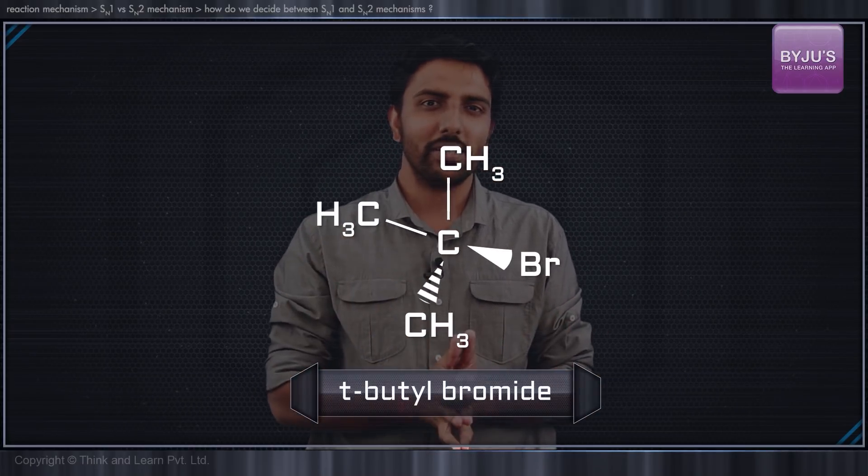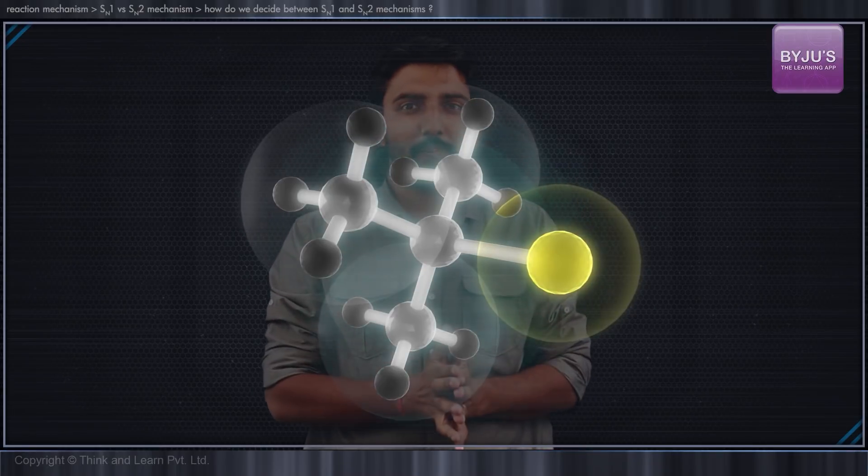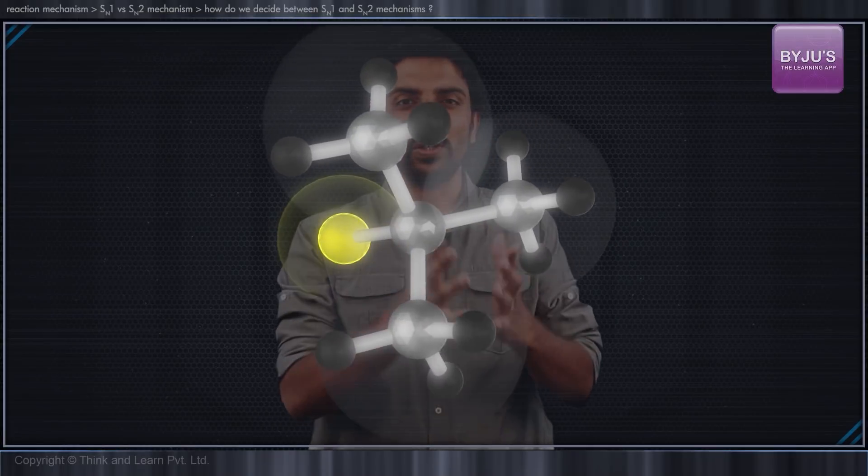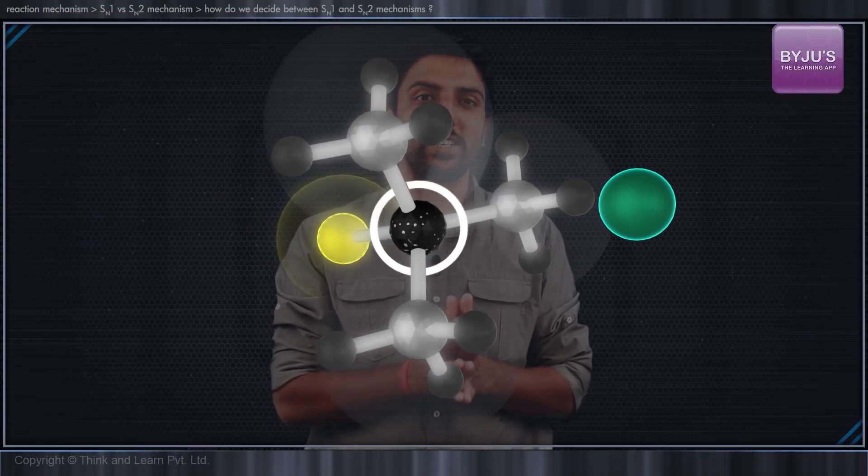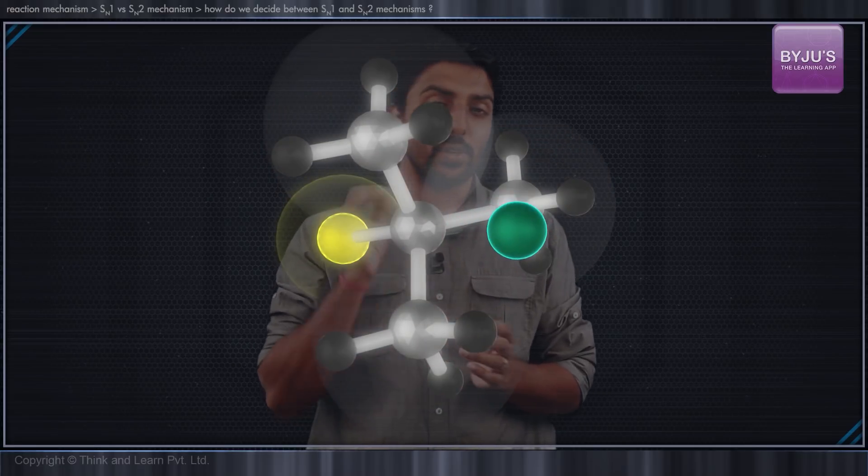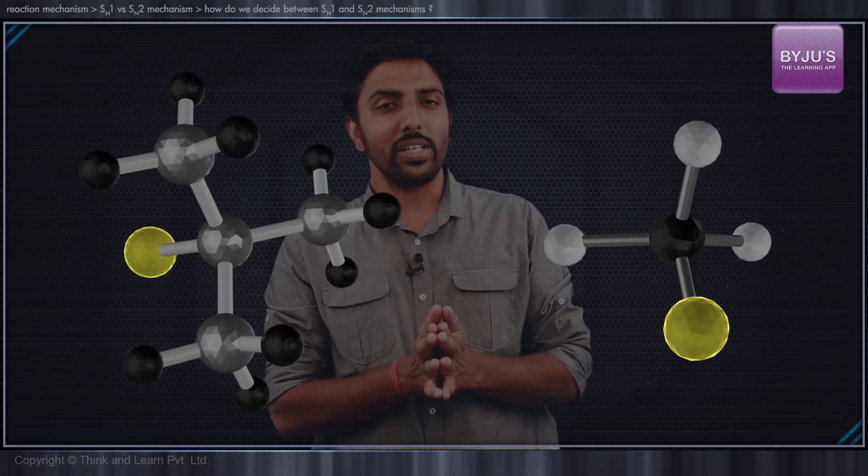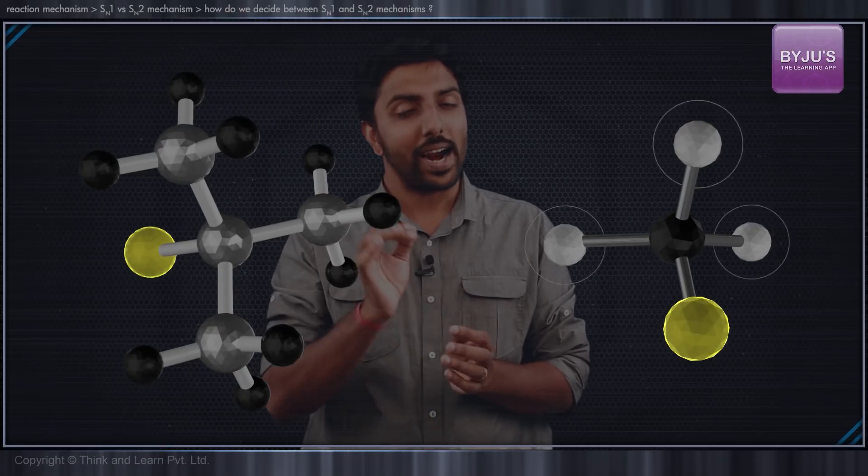But a tertiary butyl bromide is a poor candidate for an SN2 reaction because the nucleophile will have to maneuver its way into the carbon center through the alkyl groups. Hence it is always ideal for an SN2 reaction if there are only small hydrogen atoms at the carbon center.